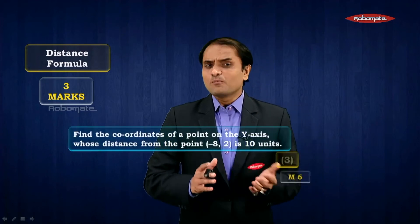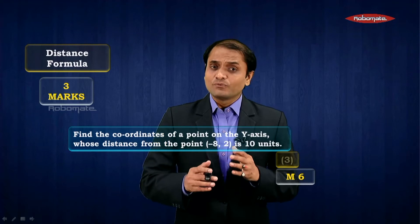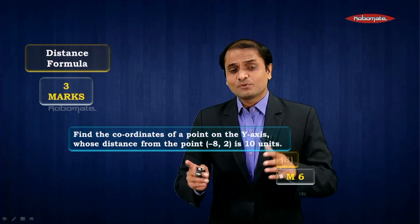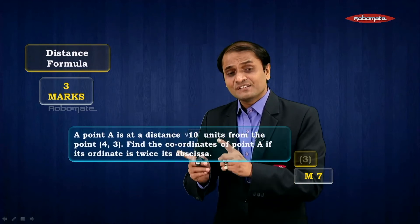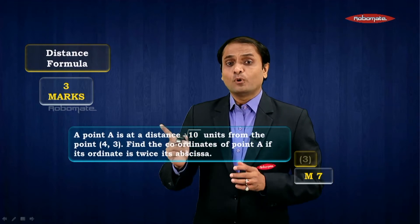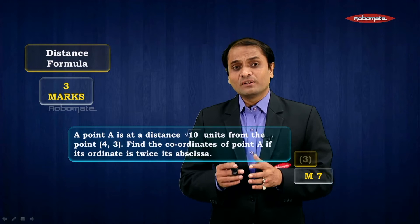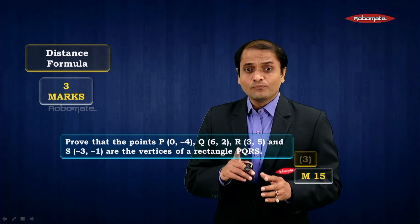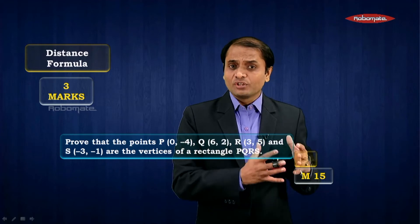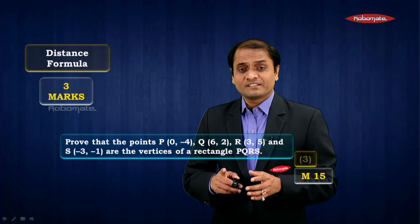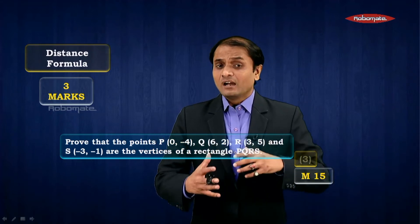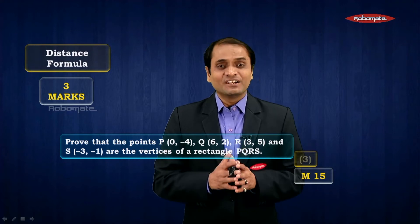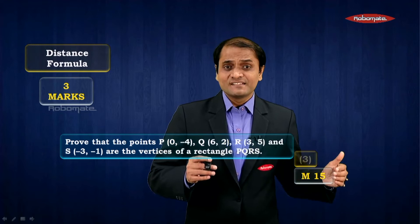From distance formula you will get one question for three marks. Mostly in that sum, distance will be given and you will have to find out coordinates of some missing point. This is the first sample — there in module number six — they can ask this for three marks. This is one more sample where distance is given and you have to find the coordinates of point A — in module number seven, for three marks. There is also a possibility they may ask you to prove that four given points are vertices of a particular type of quadrilateral, such as a rectangle, by showing opposite sides are equal and diagonals are also equal — in module number 15, for three marks.